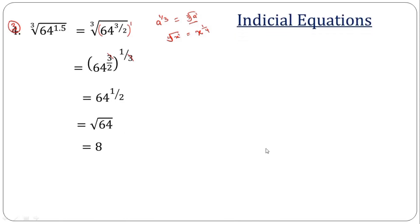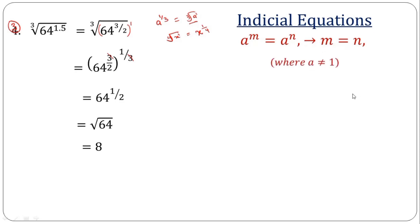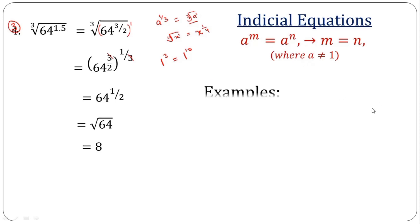Having seen all the laws, the next thing is indicial equations — how to solve equations involving indices. We have a particular rule: when you have two index numbers on opposite sides of an equal sign and their bases are the same, their powers must also be the same. But this rule applies on the condition that the bases must not be 1, because 1 raised to the power of anything always gives 1, so the powers wouldn't necessarily match. Apart from that, once the bases are the same, the powers must be the same.